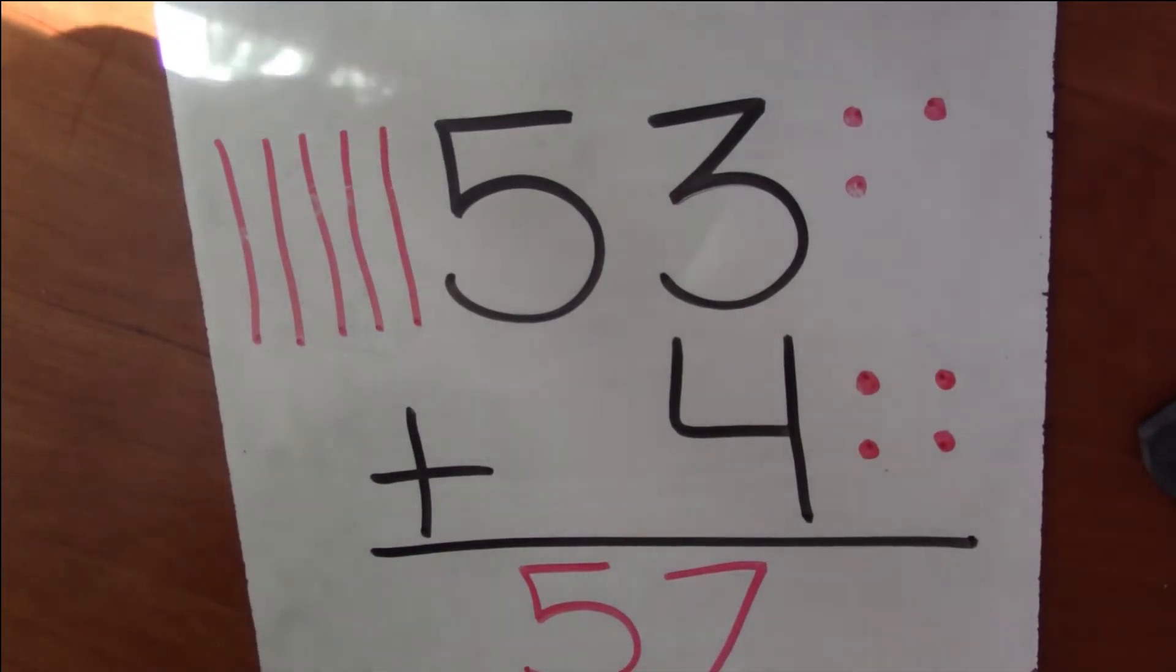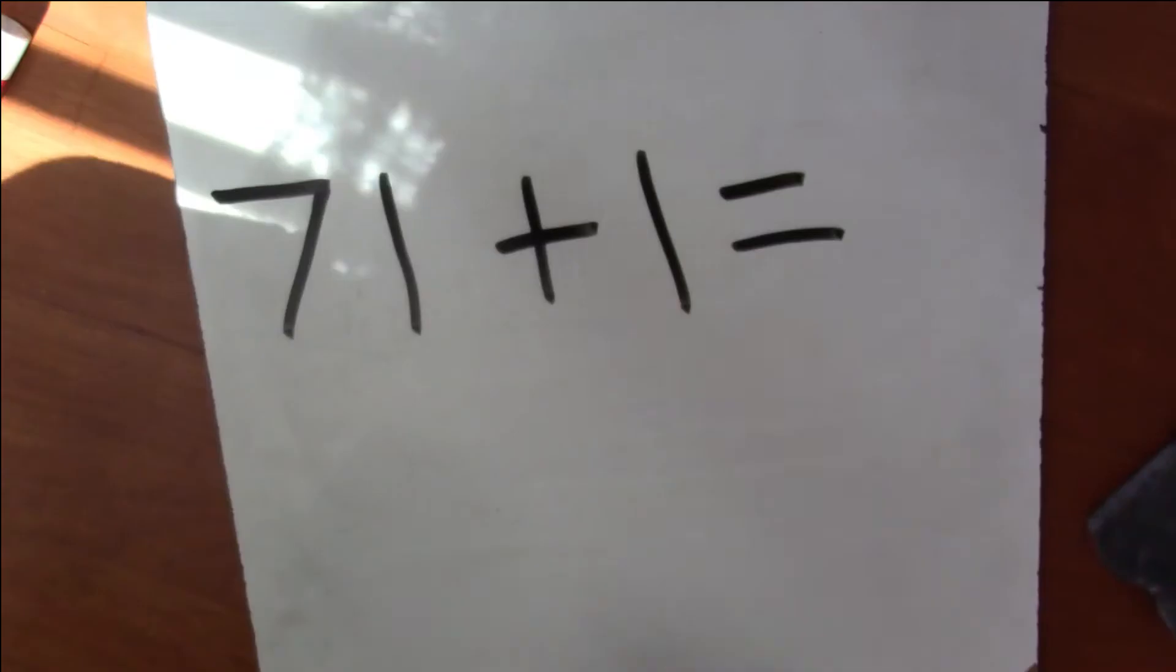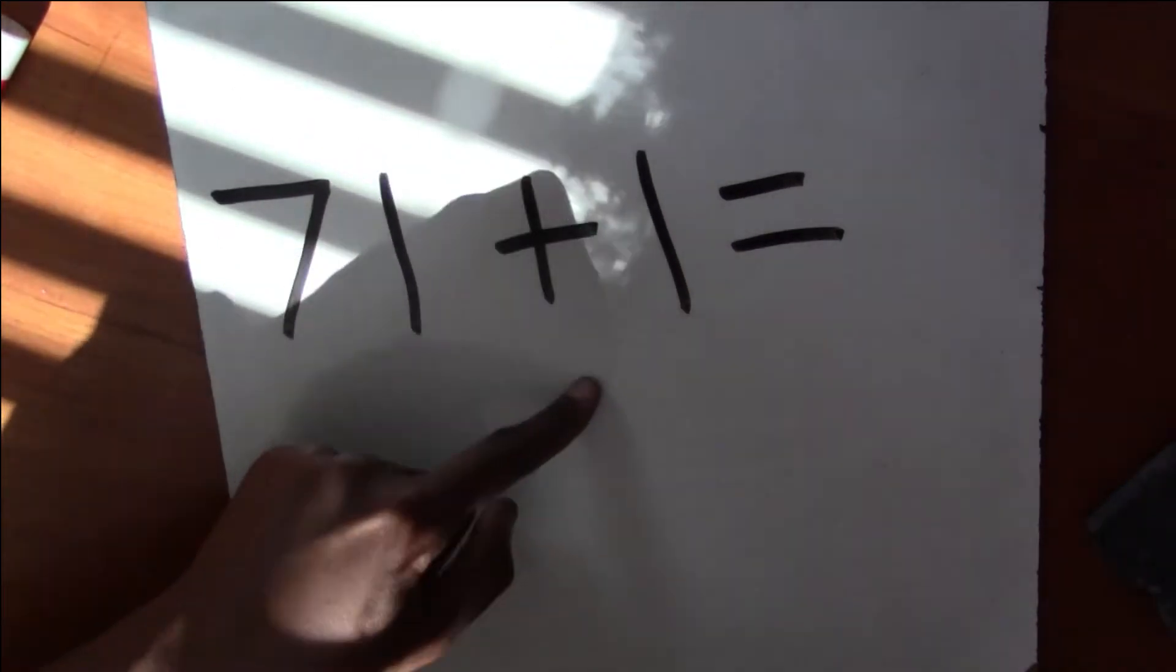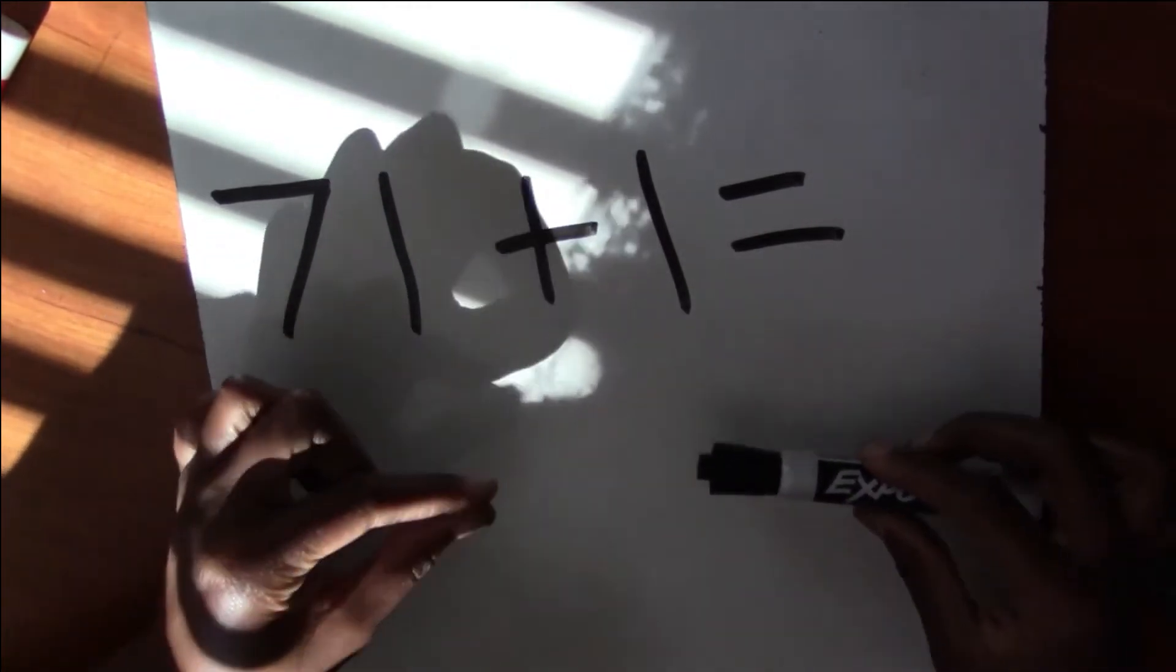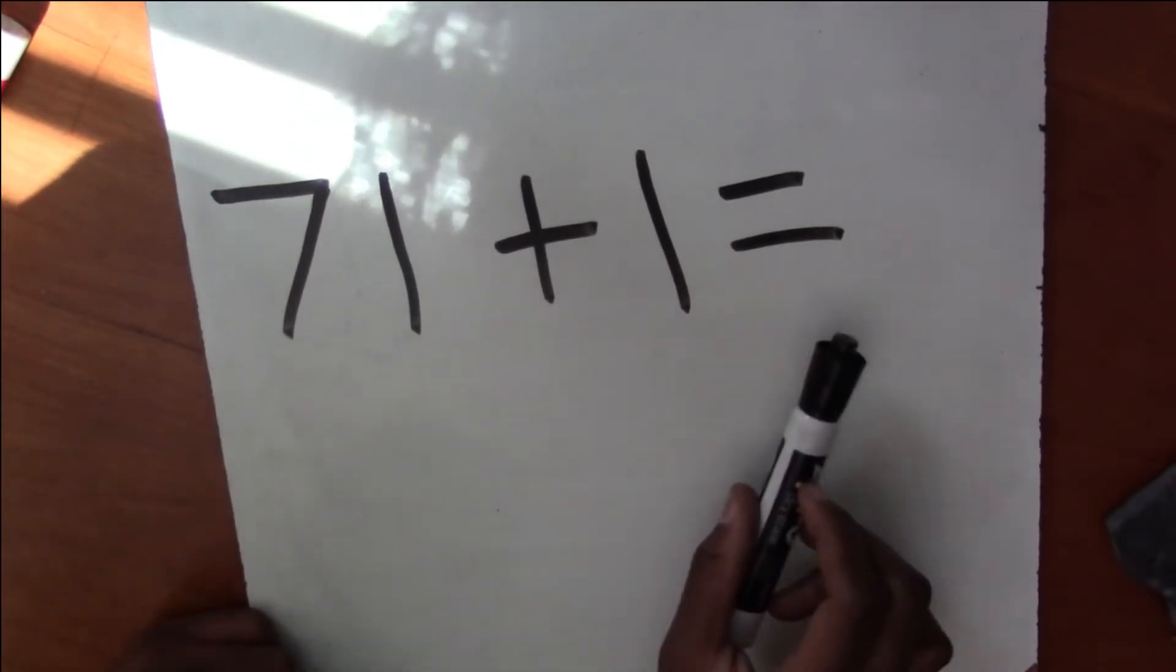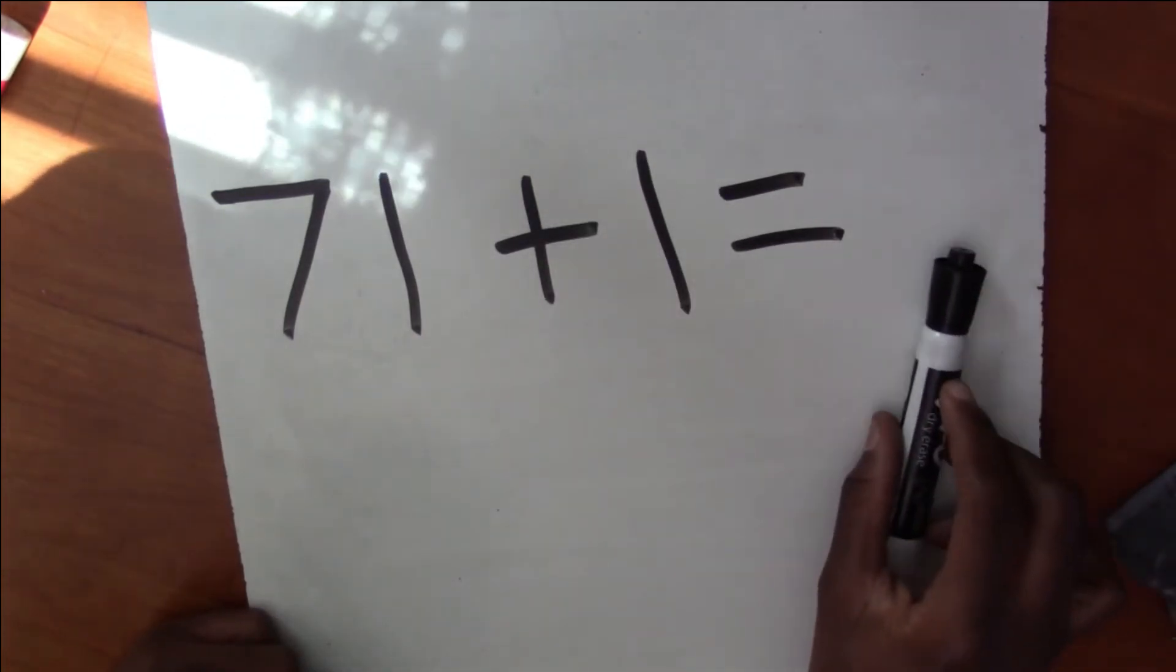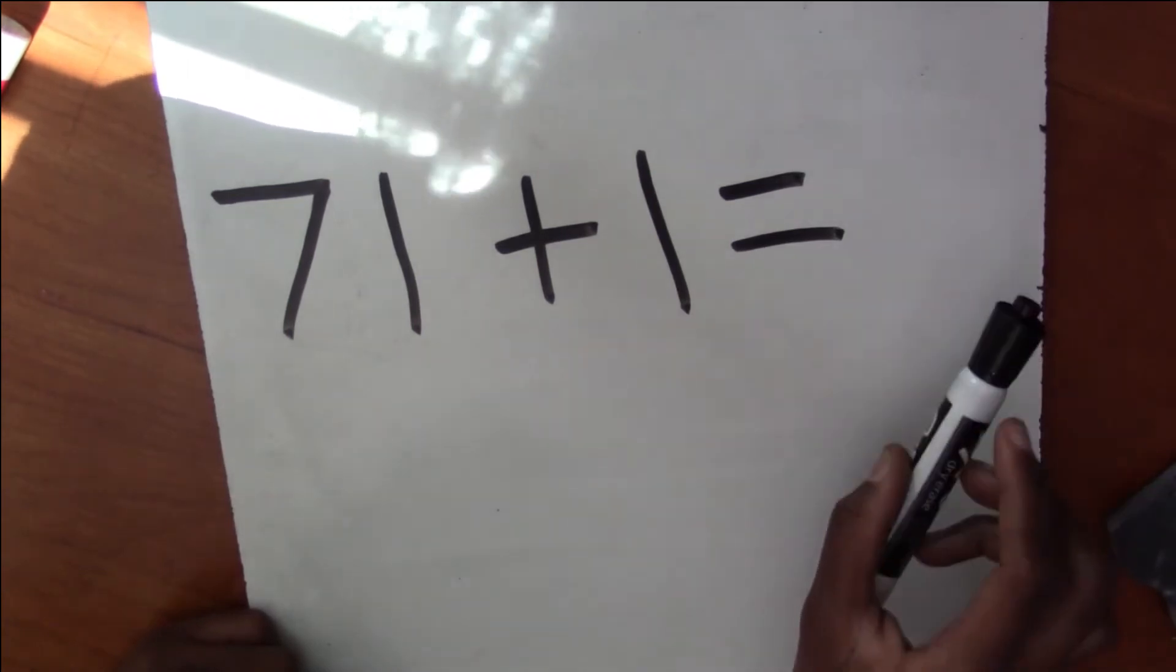All right. So for the next problem, I'm going to try to trick you. We're going to mix it up just a little bit. So I wrote this problem a little bit differently. Instead of writing it vertically where it goes up and down, I wrote it from left to right or horizontally. So I have my first number and then I have my second number and we're going to say what it equals. We solved this the exact same way we solved the other problems.